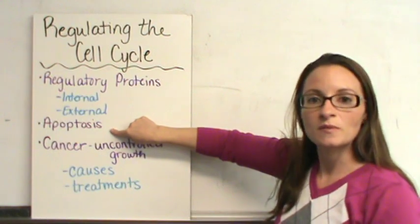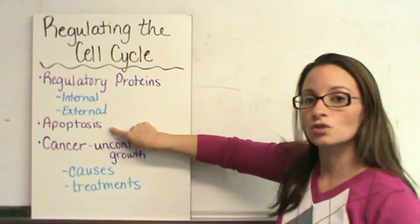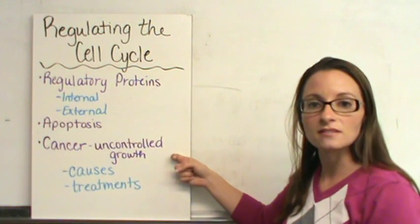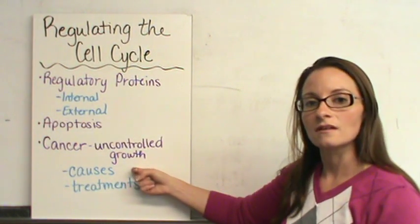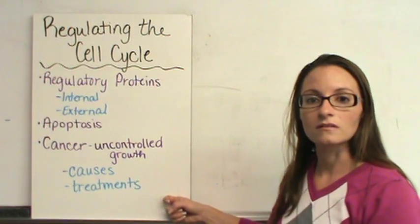We're going to talk about apoptosis, which is controlled cell death. And we're also going to talk about cancer, which is uncontrolled cell growth, and what are some causes and treatments for cancer.